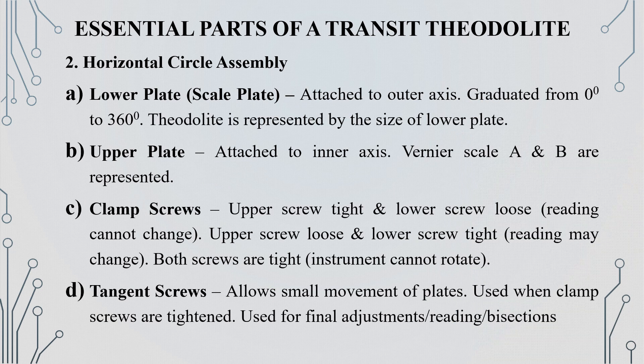The second essential part classification is the horizontal circle assembly. It consists of the lower plate and the upper plate, along with the clamp screws and the tangent screws.